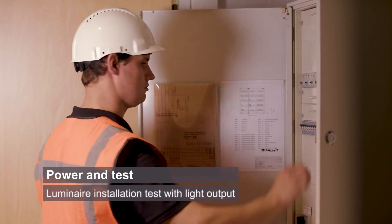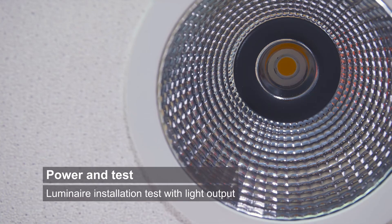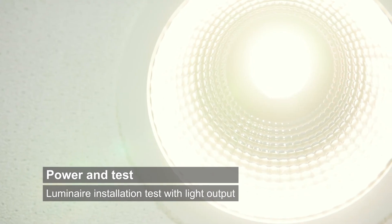Switch back on the power in the main cabinet and test the light output of the luminaire. When it all looks good, you finish the installation of the downlight with LEDCODE BLE radio.